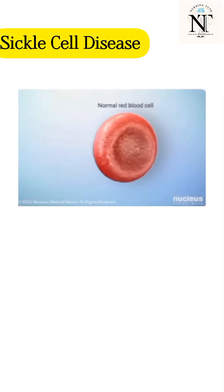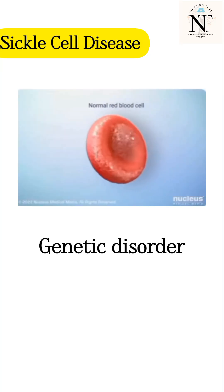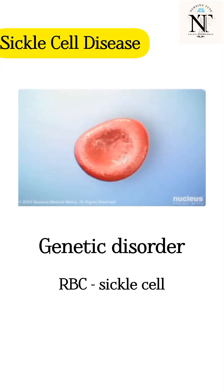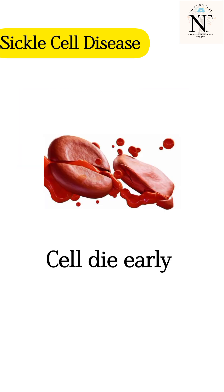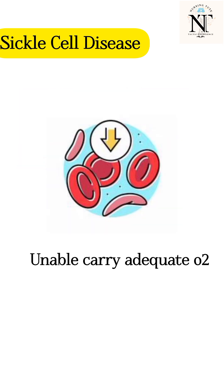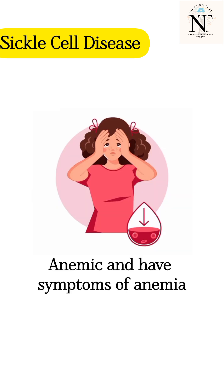Sickle cell disease is a genetic disorder in which RBCs of a person take on the shape of a sickle cell. The cells die early and are unable to carry an adequate amount of oxygen. As a result, the person is generally anemic and has all the symptoms of anemia.